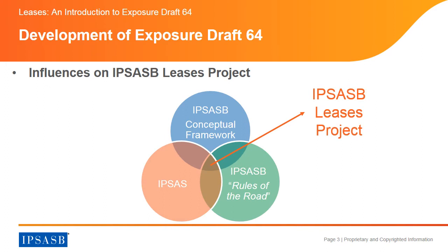The IPSASB Leases Project has three key influences. The IPSASB decided that the Leases Project is a convergence project, because in developing IPSAS 13 leases, the IPSASB had concluded that the economics of a lease transaction were the same in both the public sector and the private sector. As a consequence, the first influence is the IPSASB's policy paper, Process for Reviewing and Modifying IASB Documents, also known as Rules of the Road. According to the Rules of the Road, when determining whether public sector issues warrant a departure from an IASB document, the IPSASB considers whether applying the requirements of the IASB document would mean that the objectives of public sector financial reporting would not be adequately met, or whether the qualitative characteristics of public sector financial reporting would not be adequately met.